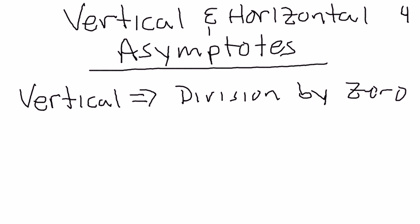The concept here is that you want to take the numerator, set it equal to zero, and solve it. That will give you a vertical asymptote.